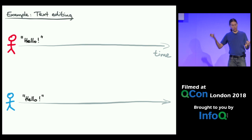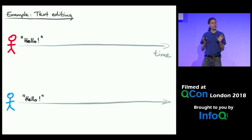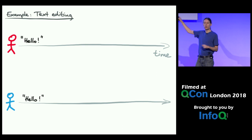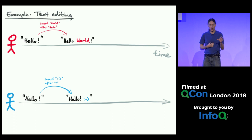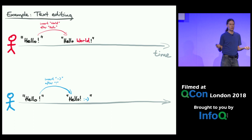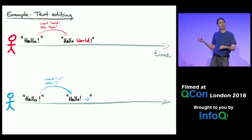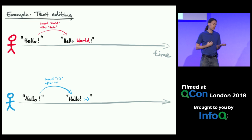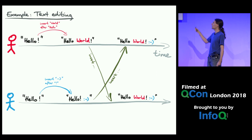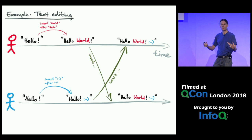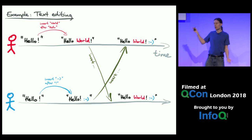Taking Google Docs as an example: if the state is a text document currently reading 'hello', and two users concurrently update it — the pink user adds 'world' before the exclamation mark and the blue user adds a smiley face after the exclamation mark — in Git this would probably be a merge conflict. But Google Docs never prompts you to resolve a merge conflict. It merges automatically: 'world' clearly came before the exclamation mark, the smiley after. So both insertions are preserved, and the sensible final merged state is 'hello world ! :)'. This is in fact what Google Docs does.